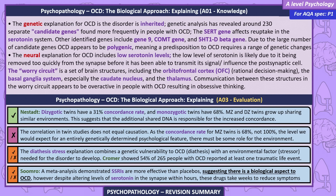Evaluations. Twin studies show dizygotic twins have a 31% concordance rate and monozygotic twins 68%. Since monozygotic and dizygotic twins grow up sharing similar environments, the additional shared DNA appears responsible for the increased concordance. However, correlation does not equal causation, and as the concordance rate for monozygotic twins is 68% rather than 100%, there must be some role for the environment. The diathesis-stress explanation combines a genetic vulnerability to OCD with an environmental stressor needed for the disorder to develop. Chroma showed 54% of 256 people with OCD reported at least one traumatic life event. A meta-analysis by Samarro demonstrates SSRIs are more effective than placebos, suggesting a biological aspect to OCD, though despite altering serotonin levels within hours, these drugs take weeks to reduce symptoms.